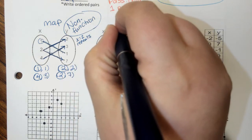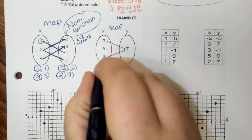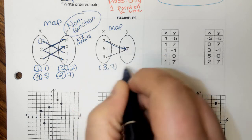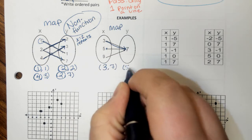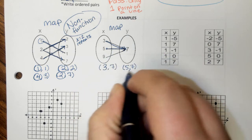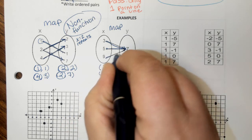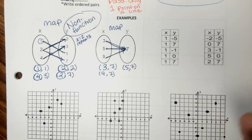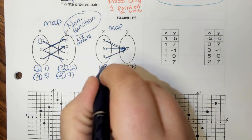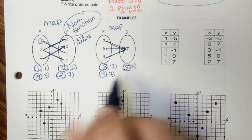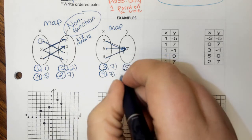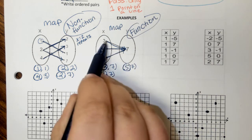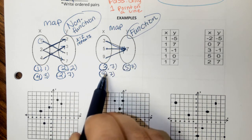Looking at the second mapping diagram: if you write all of the ordered pairs, you have x=3 mapping to 7, x=5 mapping to 7, and x=9 mapping to 7. To determine if this relation is a function, ask yourself: are the x's different? Circle all of the x values — 3, 5, and 9. The x's are different, so the answer is yes, which means this is a function. Even though all of the y values are the same, because the x values are all different, this is a function.